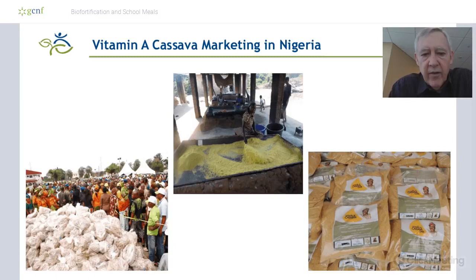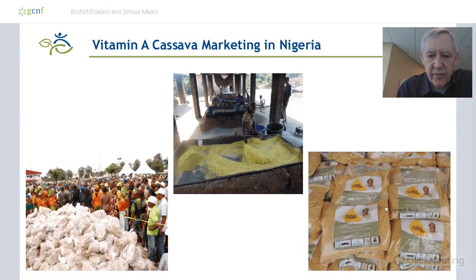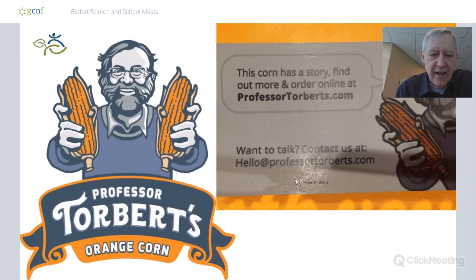In Nigeria with the yellow cassava, we have yellow gari being sold in packages, and we're creating demand through various means. It's a little bit more difficult with the yellow and orange biofortified products than with the iron and zinc crops. I've now gone on for about 25 minutes about biofortification — let me cover one final topic.